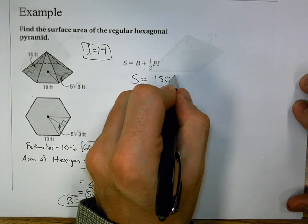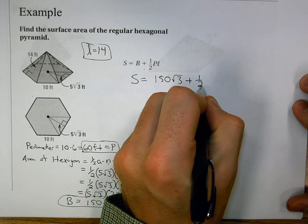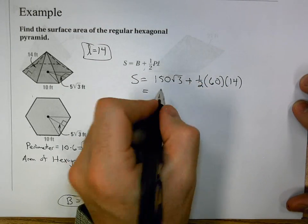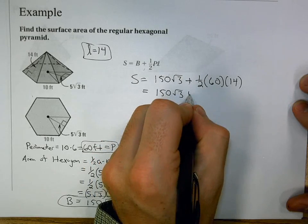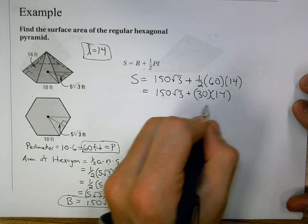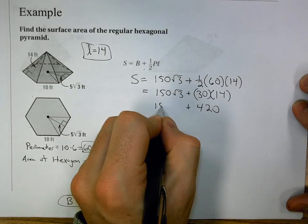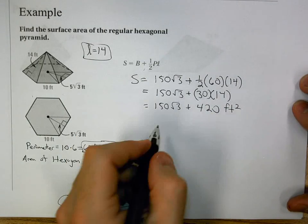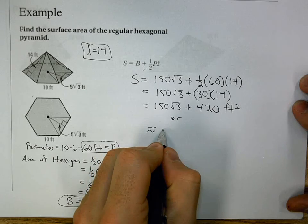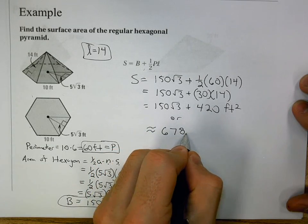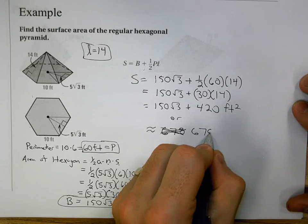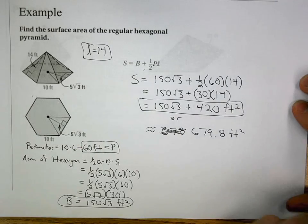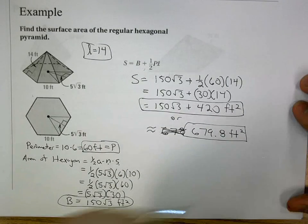With all three values, surface area = 150√3 + ½(60)(14) = 150√3 + 420. In simplified radical form that's (150√3 + 420) feet squared. As a decimal, it comes out to approximately 679.8 feet squared. Both answers represent the same value.